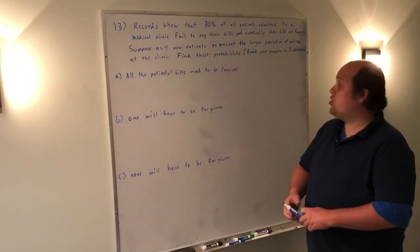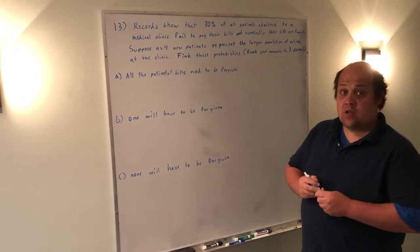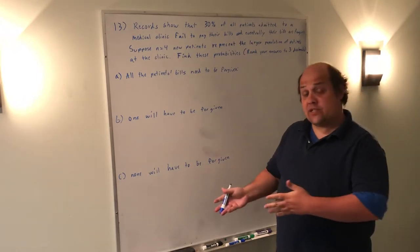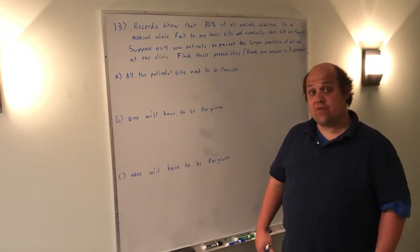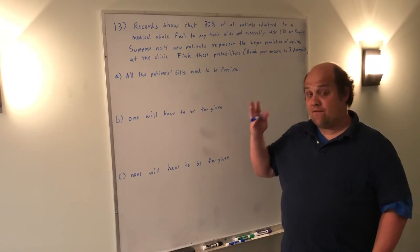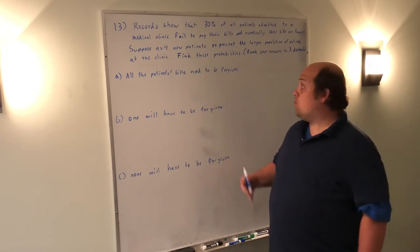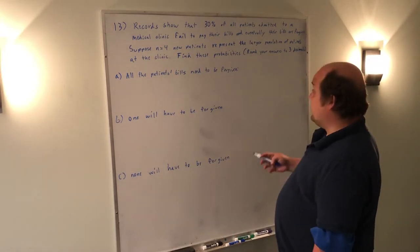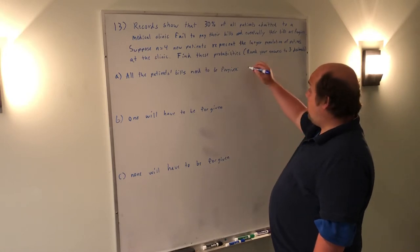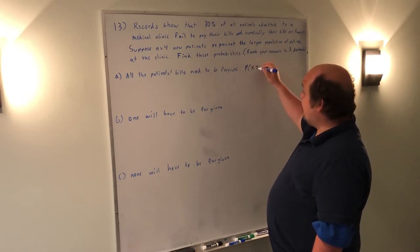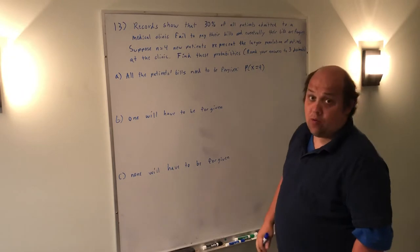First one says all of the patient's bills need to be forgiven. So if we have 4 patients and all of their bills need to be forgiven, that would mean that we have 4 out of 4. What this is asking me to do is solve for the probability that X equals 4, using the binomial formula.